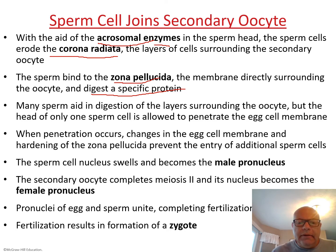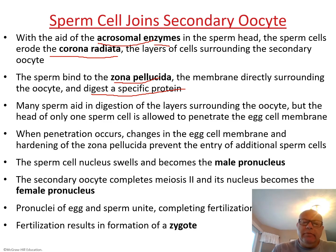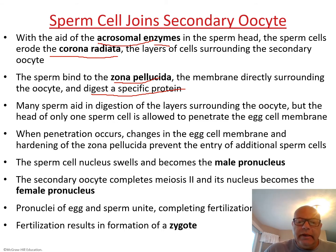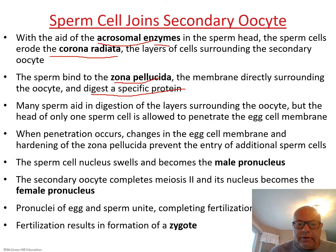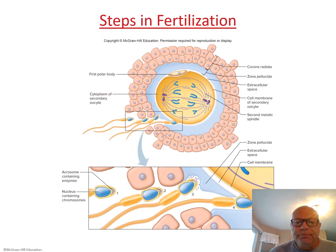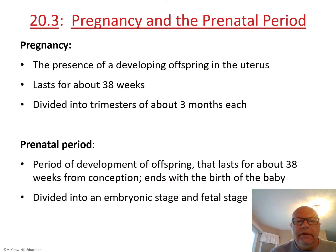Once one sperm gets in, the zona pellucida hardens, stopping the rest from entering. The sperm cell nucleus swells and becomes the male pronucleus. The secondary oocyte completes its second meiotic division and its nucleus becomes the female pronucleus. When they unite, fertilization is complete and we get the one-cell zygote.